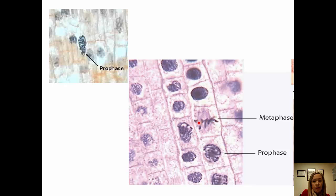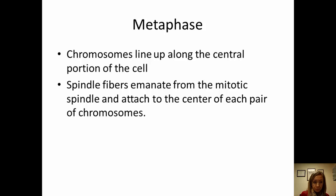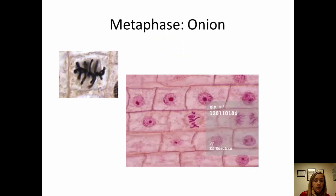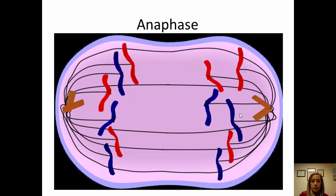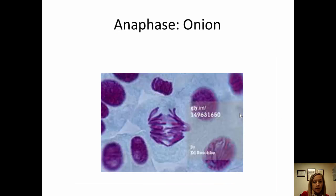The next stage is metaphase — those chromosomes come and line up in the middle. Meta means middle; they line up along the metaphase plate, or the central plate. You can see them all lined up in the onion slide. The next phase is anaphase, where the two different sets of chromosomes are pulled in opposite directions toward opposite poles — you can see the two sets being pulled apart in the onion.